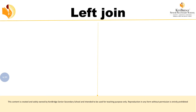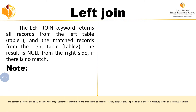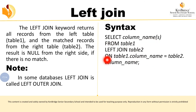Now we are going to see about left join. Left join returns all the records from the left table and the matched records from the right table. Unmatched records are shown as null. Left join and left outer join are the same. The syntax is: SELECT column_name FROM table1 LEFT JOIN table2 ON table1.column_name = table2.column_name. The only difference across all join syntaxes is the keyword used.